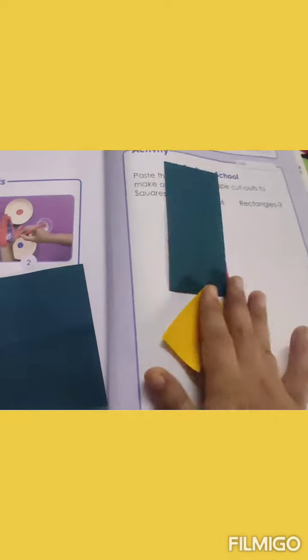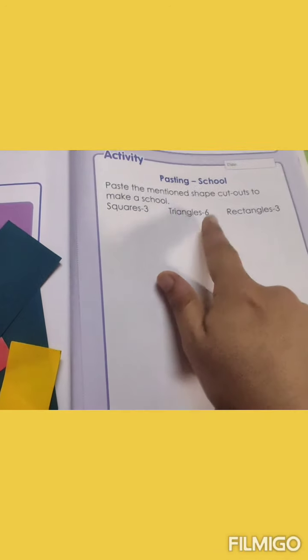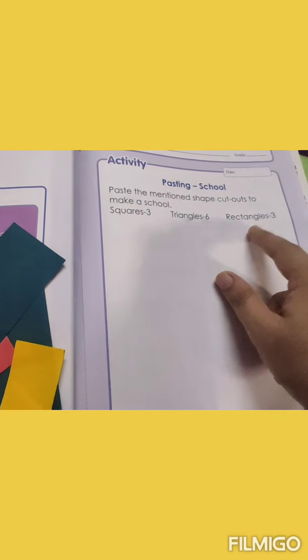So we will cut according to the requirement what is given here. We will cut 3 squares, 6 triangles and 3 rectangles. Now we will make a building of a school. So let's start.